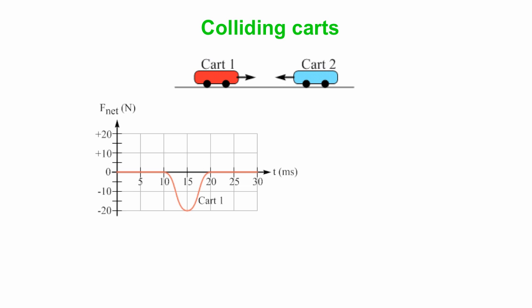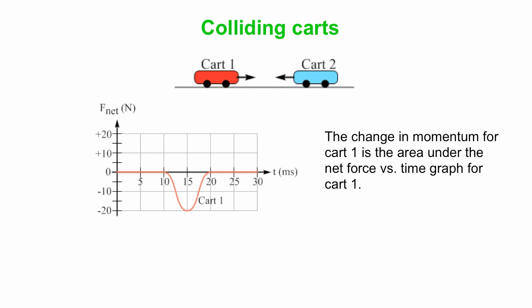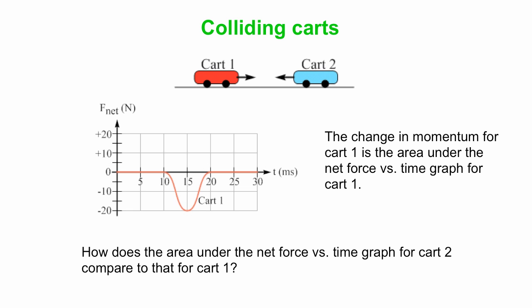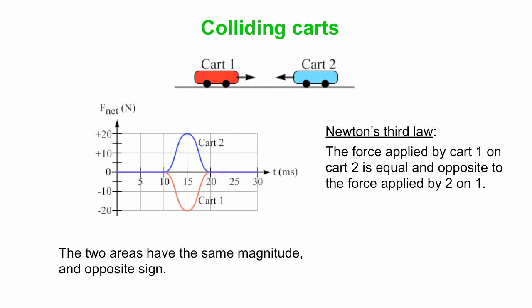How does this work? This graph shows the net force acting on cart one because of cart two as a function of time. The change in momentum is the area under the net force versus time graph. In this case, this will be a negative quantity - we're taking to the right to be positive here. But how does the area under the net force versus time graph for cart two compare to that of cart one? Do we need to know how the masses compare or something like that? Nope. We just think about Newton's third law. The force applied by one on two is equal and opposite to the force applied by two on one. So those two areas have the same magnitude but opposite sign.